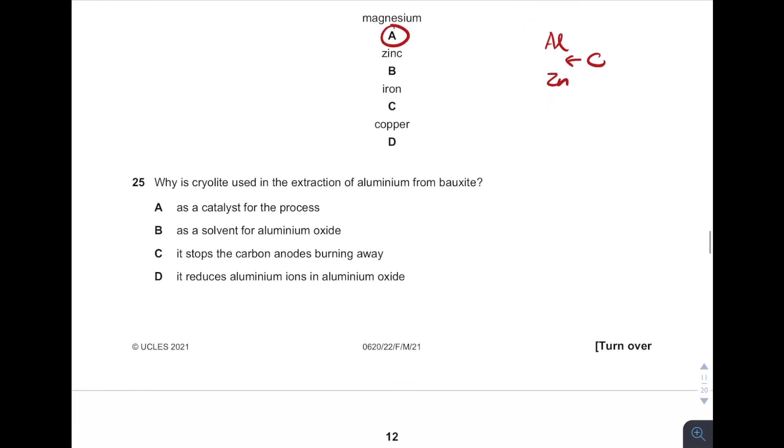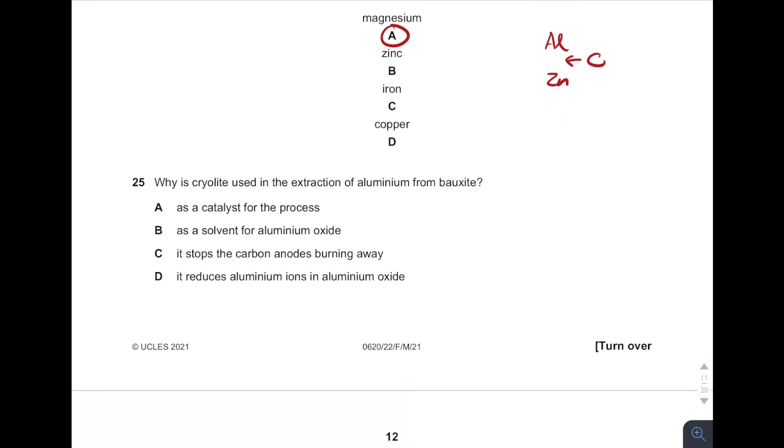Okay, then why cryolite is used in the extraction of aluminum from bauxite? Remember, cryolite is used to improve the conductivity and to lower the melting point. So answer is B. It acts as a solvent to improve the conductivity by increasing the amounts of free-moving ions.